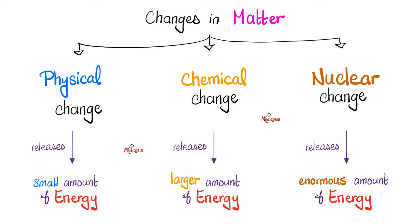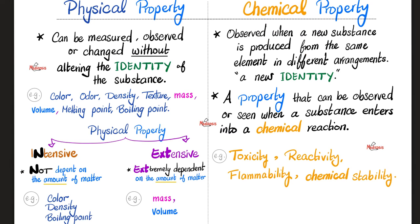Recall from video number one — we talked about changes in matter. We have physical change, chemical change, and nuclear change. Physical change releases a small amount of energy. Chemical change releases a larger amount of energy. Nuclear, on the other hand, releases tons of energy.